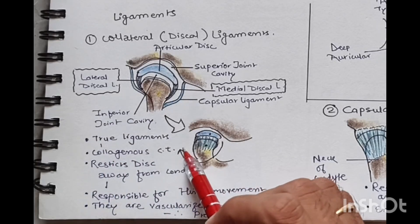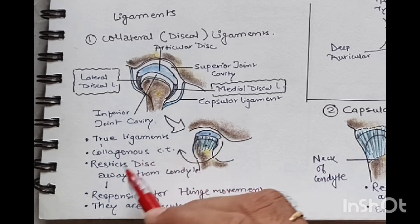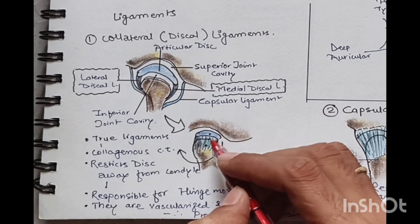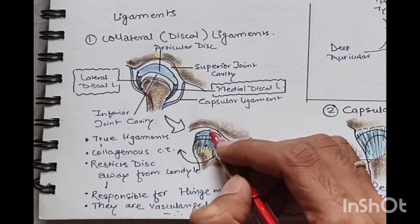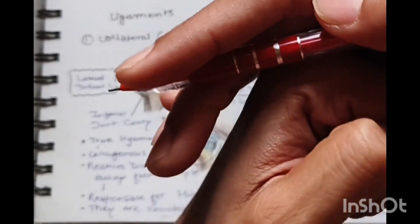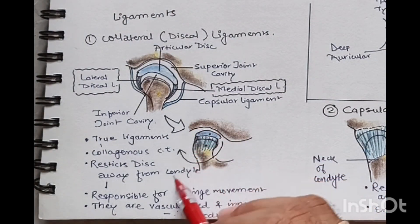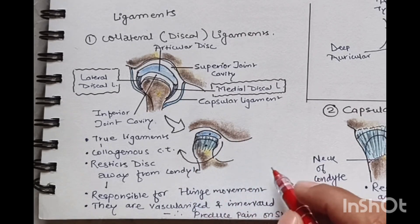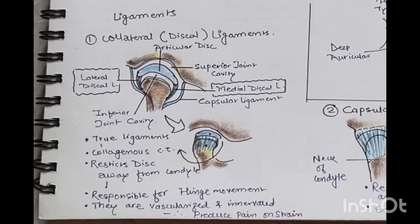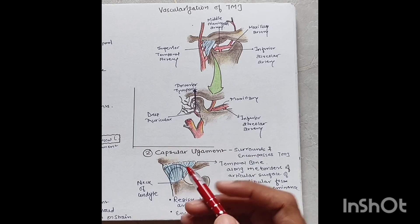These are true ligaments made of collagenous connective tissue. They restrict the movement of the disc away from the condyle and are responsible for the hinge movement, because they constantly bind the disc to the condyle so the condyle can only perform hinge movement. The inferior cavity of the joint is therefore responsible for the hinge movement. These ligaments are vascularized and innervated, which is why they can produce pain and sensation.